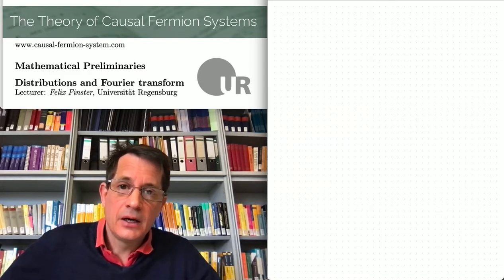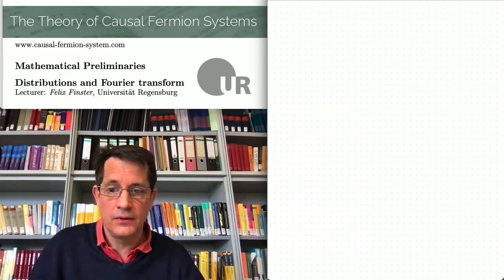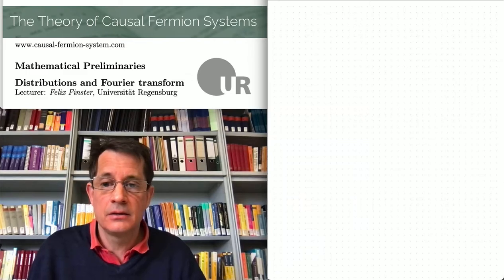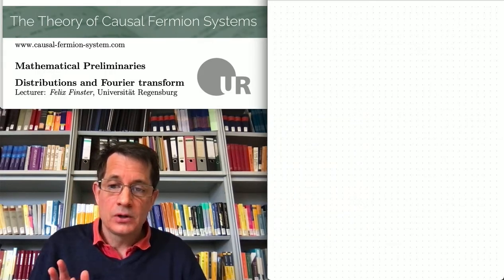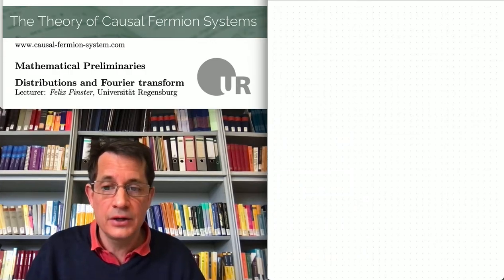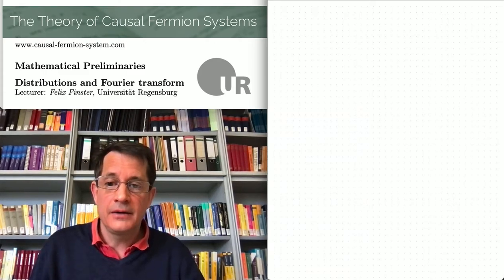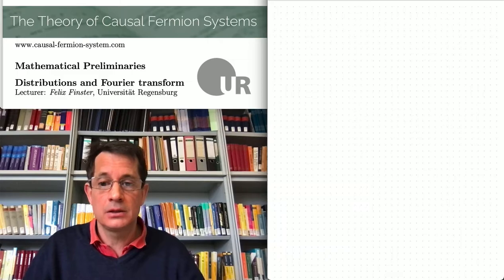Hello everybody and welcome to this video, in which I want to explain a few basics on distributions and Fourier transform. I will be quite brief, but you'll find more details in nice textbooks — a few suggestions are on our website. To give you an outline: I will first introduce the Schwartz space, then the space of tempered distributions, explain how to do computations with them, then move on to the Fourier transform, and at the end I will make a remark on general non-tempered distributions.